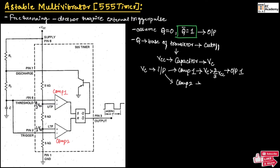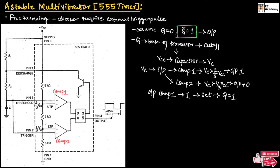At comparator 2, VC will be greater than 1/3 VCC, so the output will be 0. Since the output of comparator 1 is 1, this will set the SR flip-flop and Q will be equal to 1. Since Q equals 1, Q bar will equal 0, so 0 will appear across the output. As you can observe, initially the output was 1, then the output will move to 0 — it will toggle between high and low state.